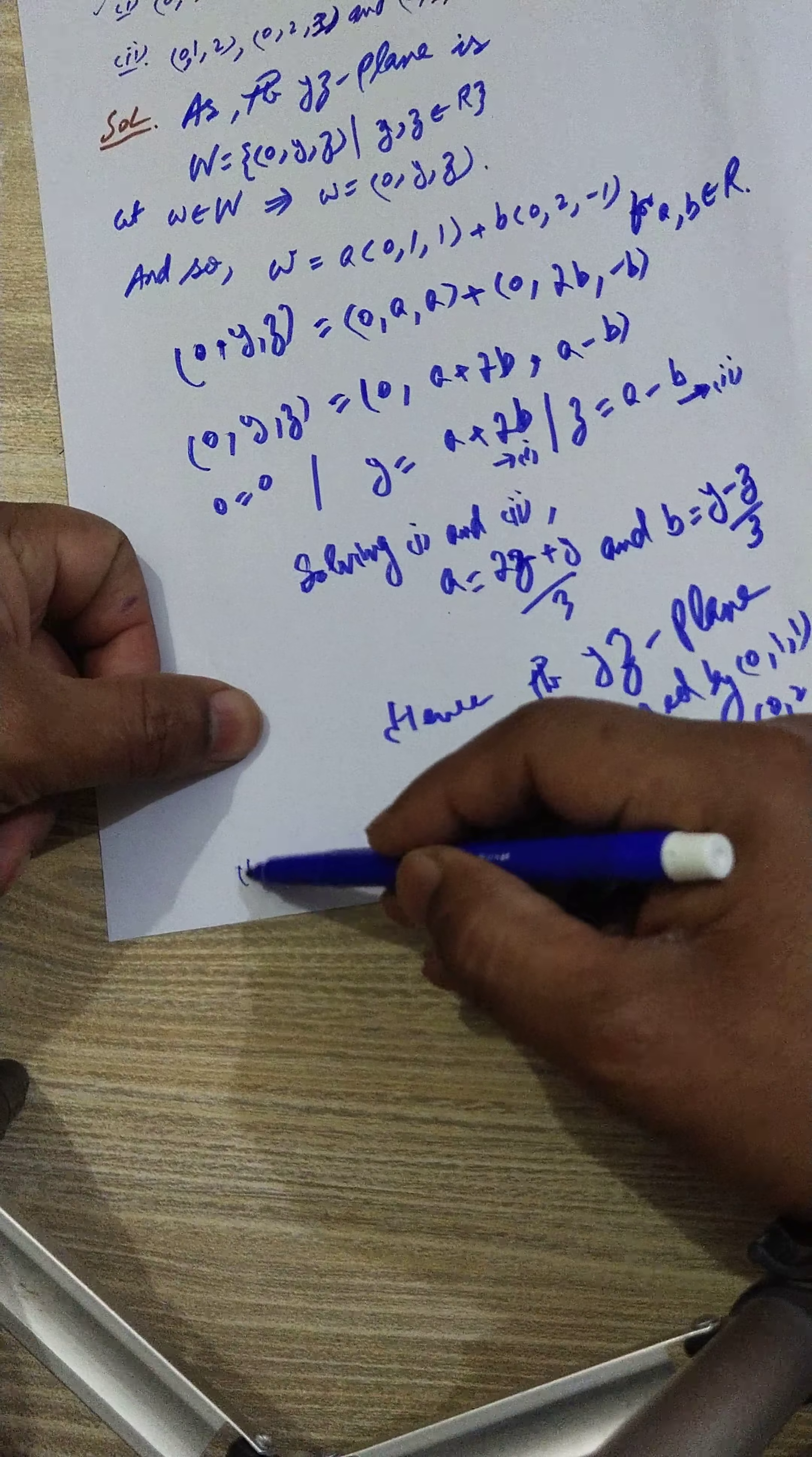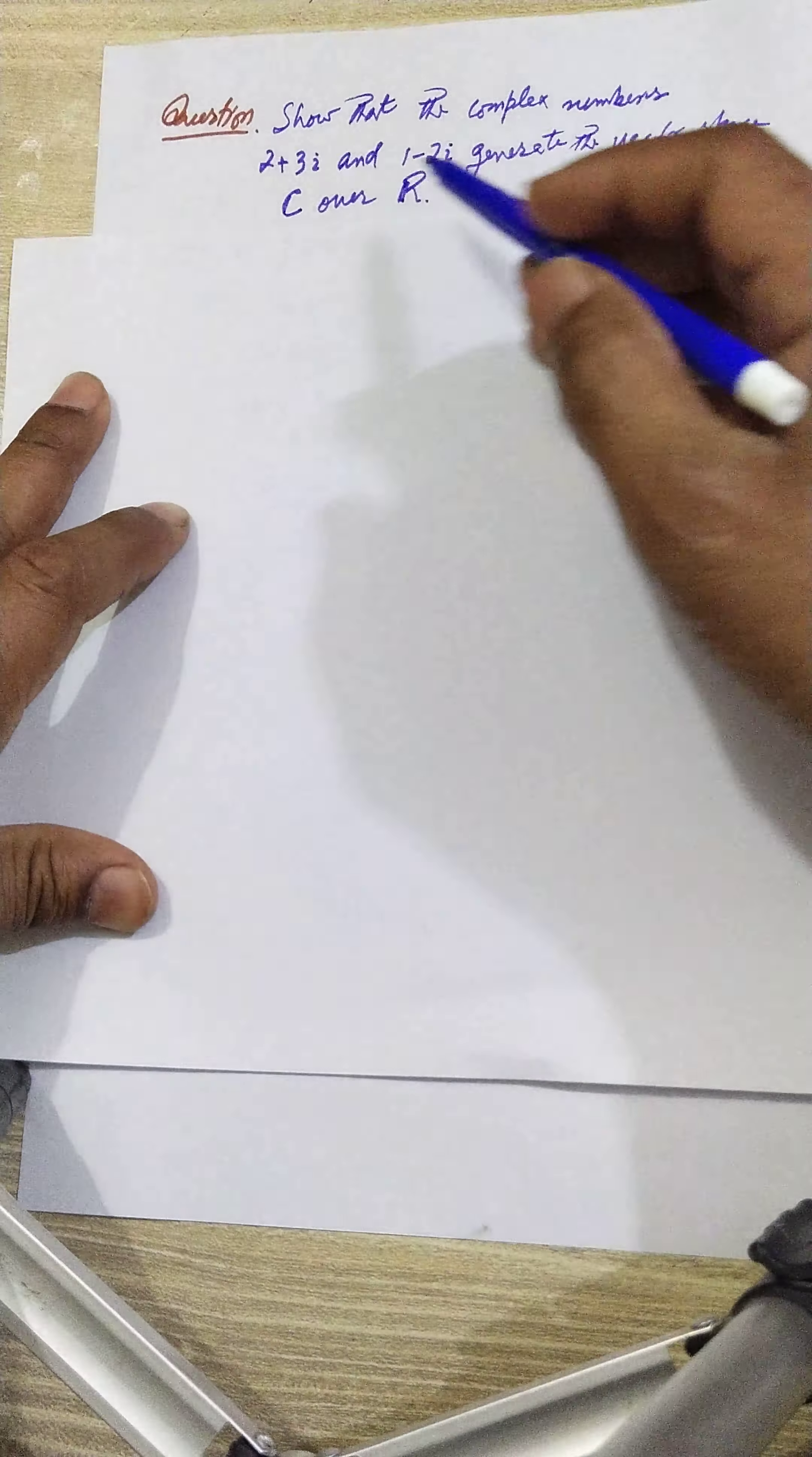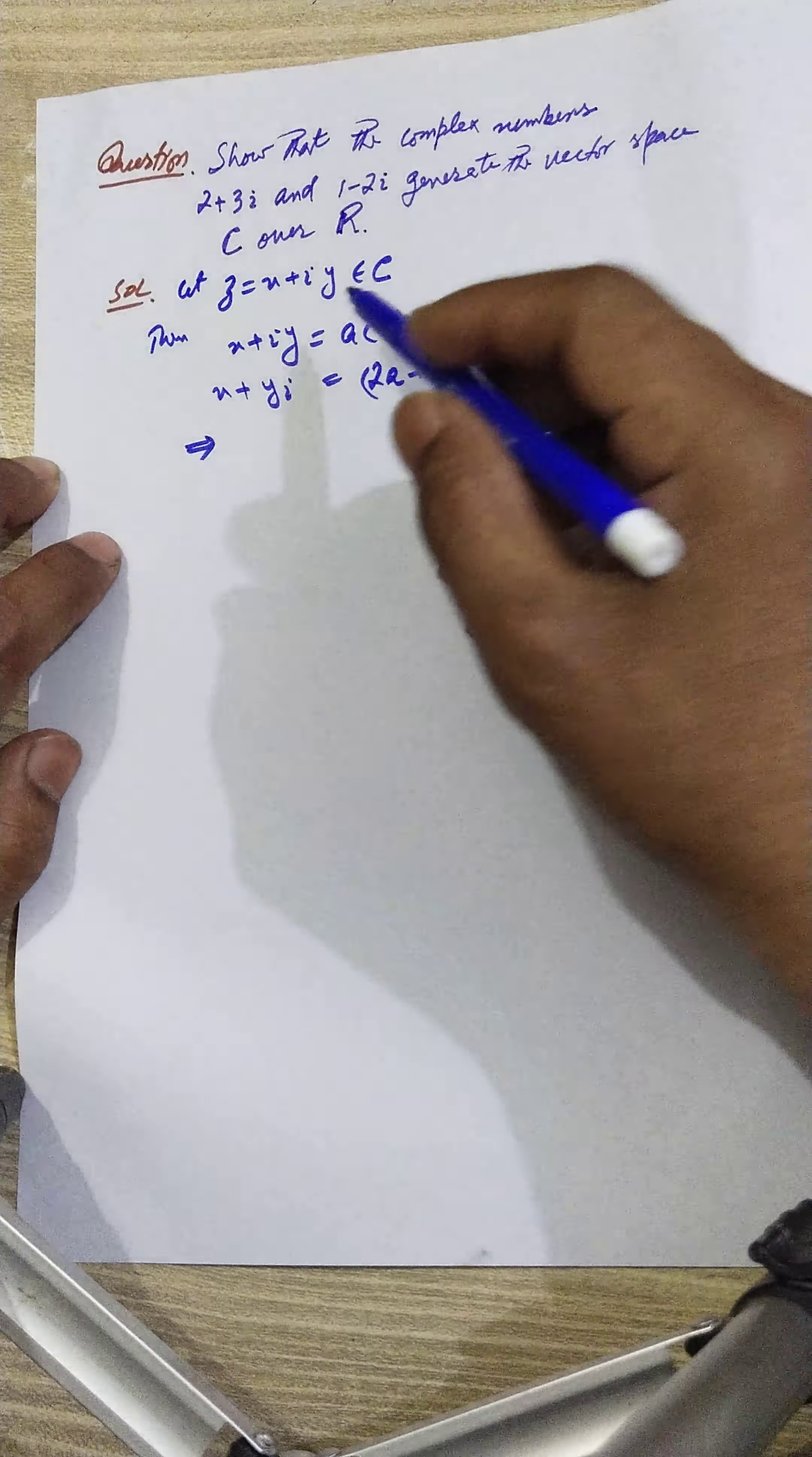The second part of this, part two, I'm giving you as homework. You have to do this yourself. It will be done in the same steps. Now we'll see another question. This is a very easy question: Show that the complex numbers 2+3i and 1-2i generate the vector space C over R.